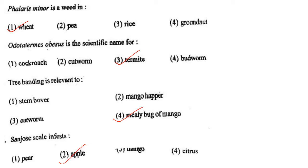Next one: Tree banding is relevant to option 1, stem borer; option 2, mango hopper; option 3, cutworm; option 4, mealy bug of mango. Answer is option 4: mealy bug of mango.